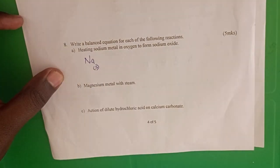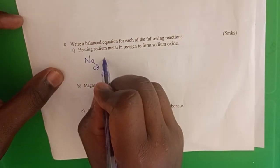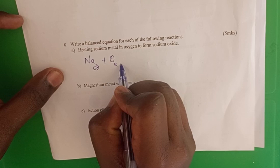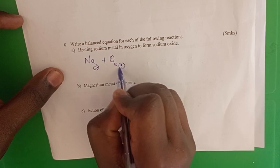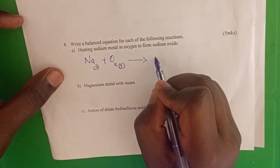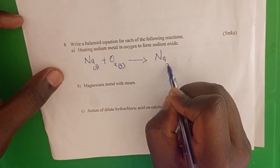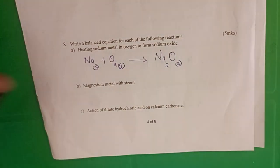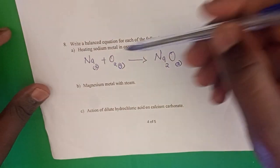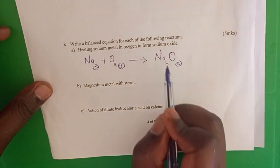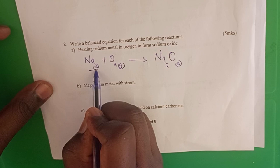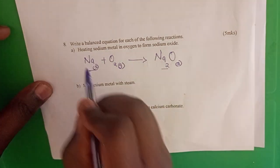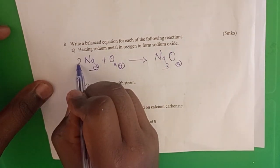Write the reactants with state symbols: sodium solid reacting with oxygen gas to form sodium oxide solid. To balance, we have one sodium on the left and two sodium on the right, so we balance by putting a two in front of sodium on the left.